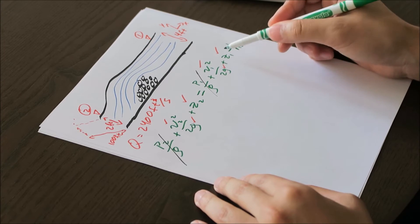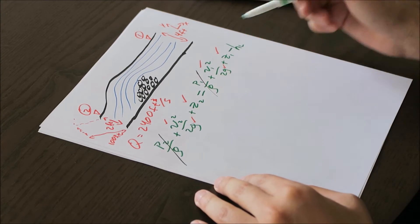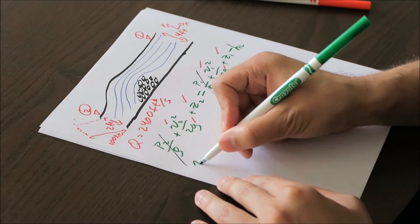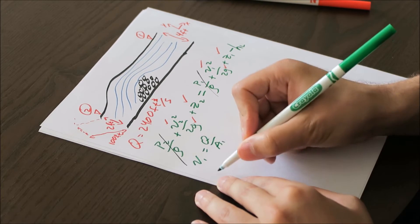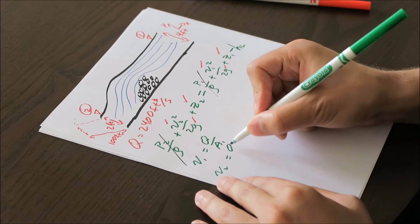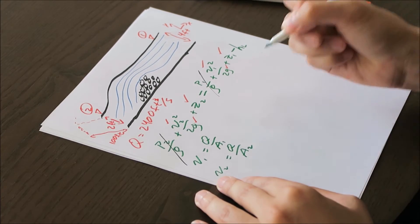Our unknowns being, or three unknowns, are V1, V2, and HL. So we'll write our equations for V1 equals Q over A1, and V2 equals Q over A2.